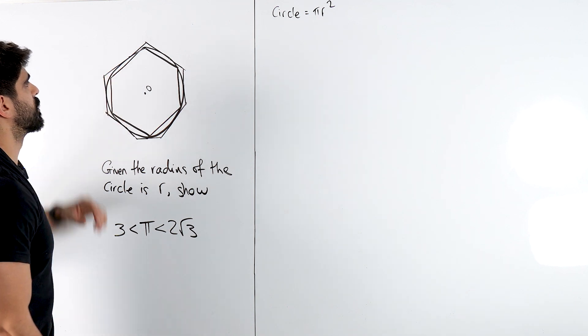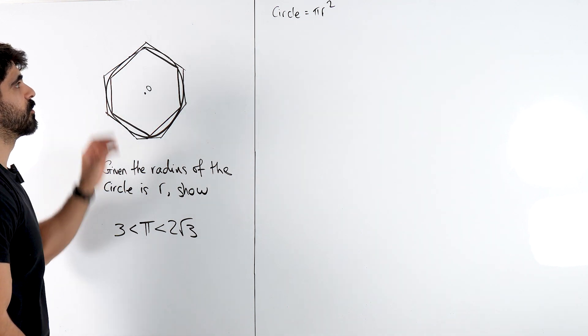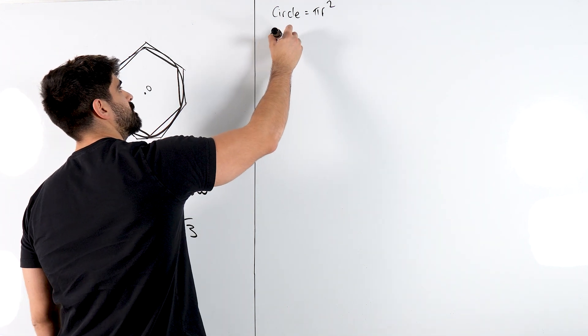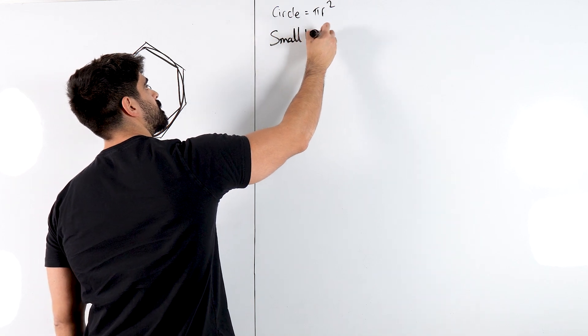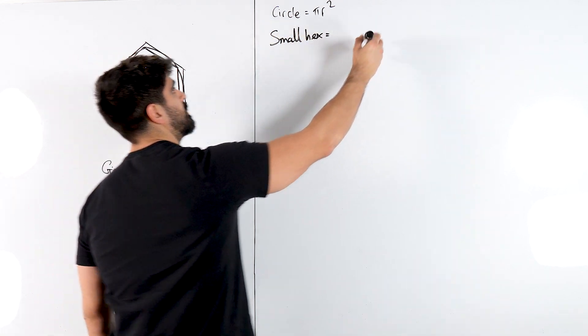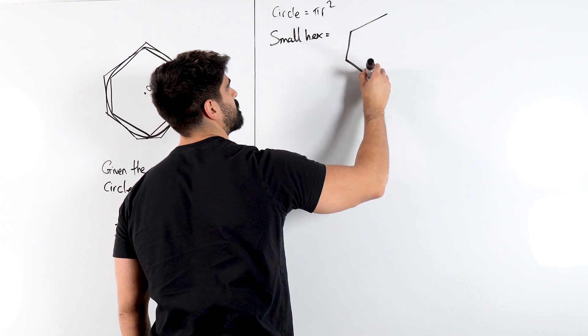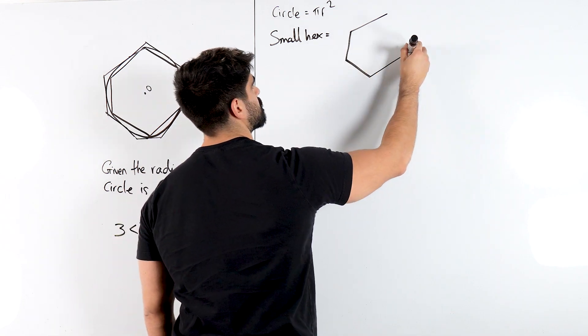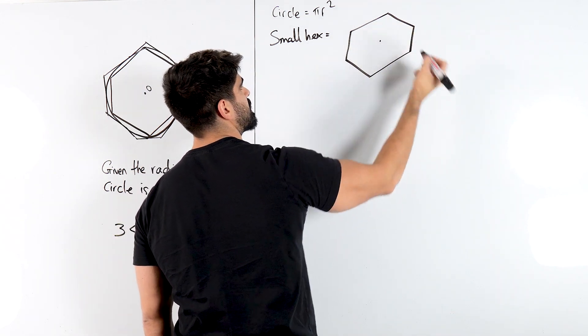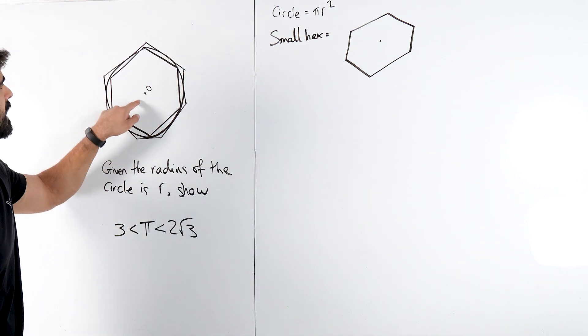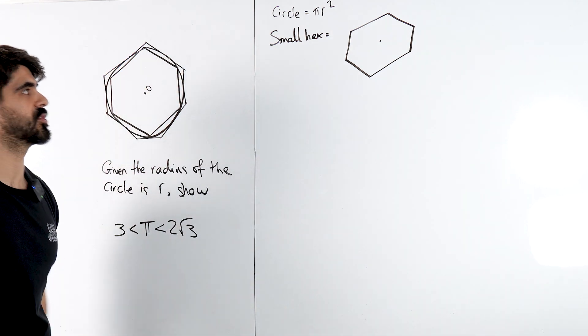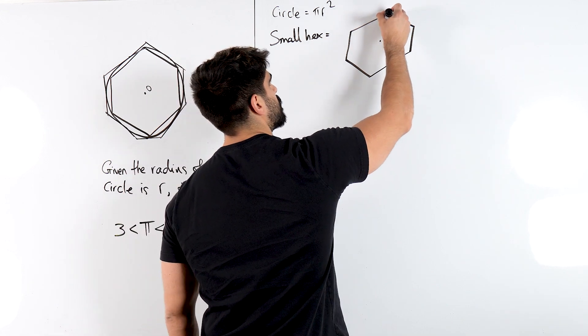Now let's figure out what's going on with this hexagon, the smaller one. The small hexagon is not that bad to find. Here's my centre of the circle. With all these questions guys, just draw lines to the vertices.